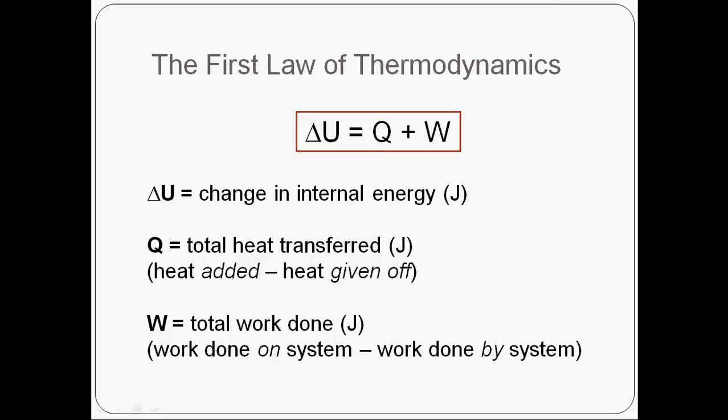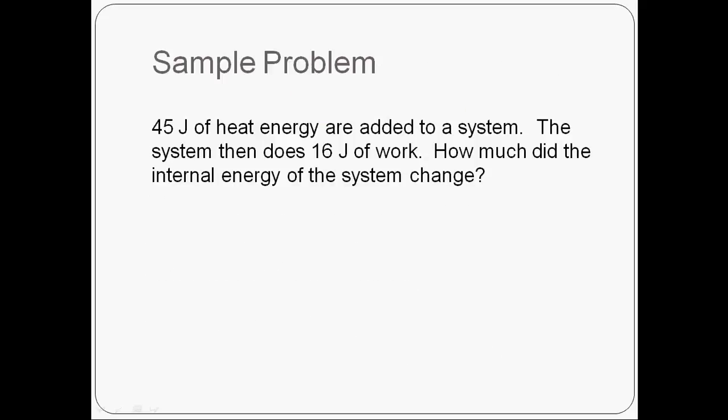Let's try this out with one quick sample problem, you won't believe how easy it is. So a sample problem. We've got some sort of system. 45 joules of heat energy are added to that system. The system then turns around and does 16 joules of work on its surroundings. We want to figure out how much did the internal energy of that system change. So I start off by listing all the things that I know about the energy transfers that occurred with this system. So I know that I added 45 joules of heat energy to the system. I didn't lose any heat energy from the system. So my total heat transferred, Q, is a positive 45 joules because we overall gained 45 joules of energy through heating.